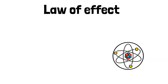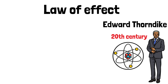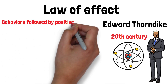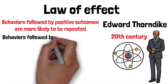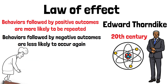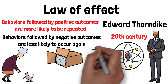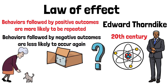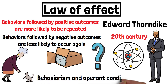The law of effect is a psychological principle developed by Edward Thorndike in the early 20th century. It states that behaviours followed by positive outcomes are more likely to be repeated, while behaviours followed by negative outcomes are less likely to occur again. Thorndike introduced this concept through his experiments with animals, particularly cats, in puzzle boxes, which demonstrated how rewards and consequences shape behaviour. This principle became a cornerstone of learning theory and laid the foundation for later work in behaviourism and operant conditioning.